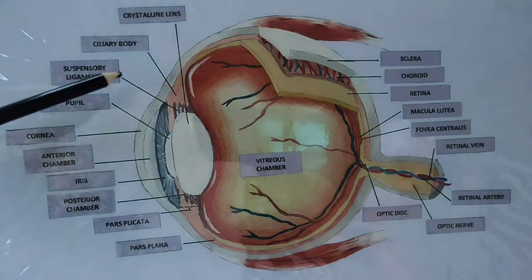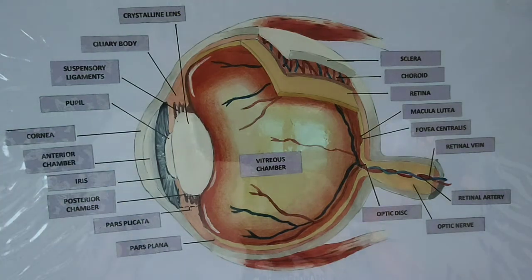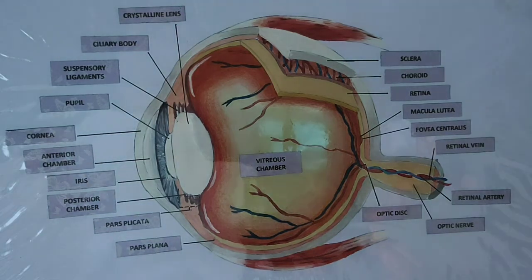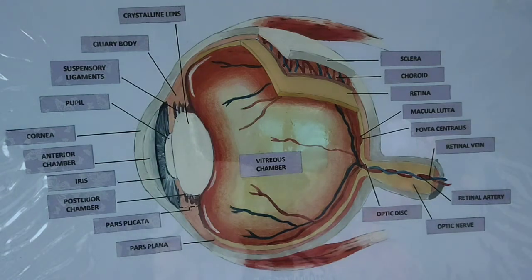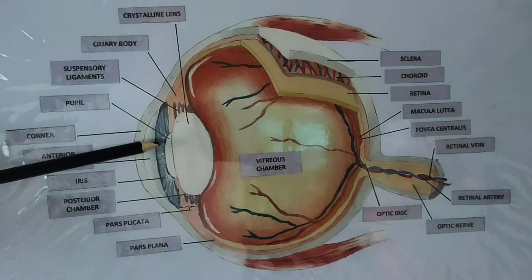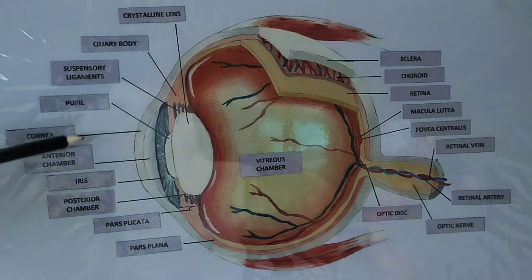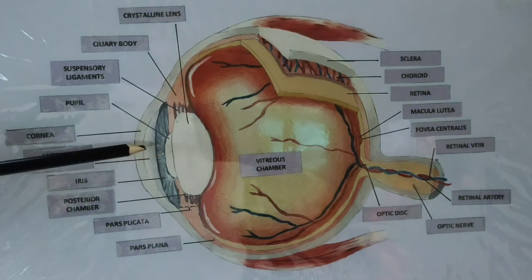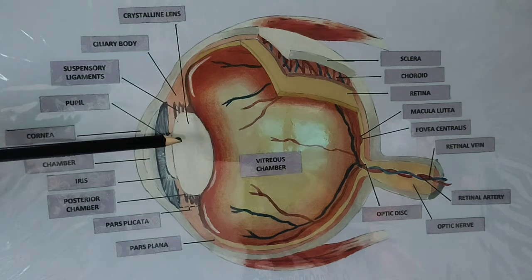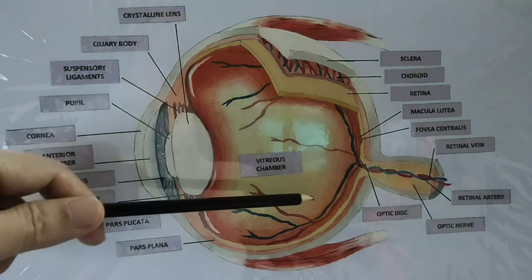Now we're going to talk about the most anterior part of the eye called the cornea. The cornea is also a fibrous coating, but unlike the sclera it is transparent. The sclera is opaque, so it doesn't allow light to get inside the eye. The cornea, on the other hand, is very transparent. It allows light to go through it.